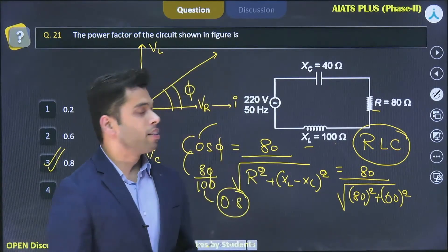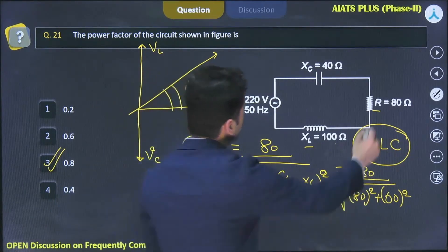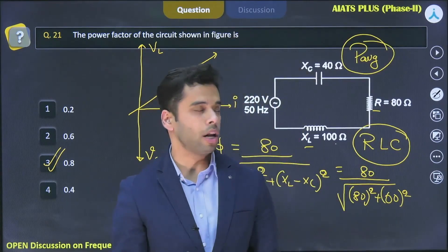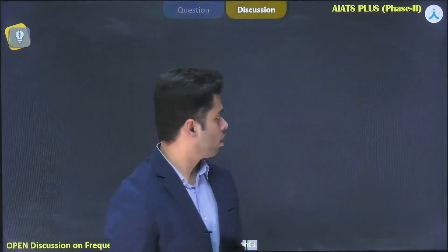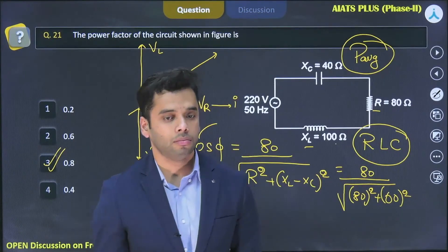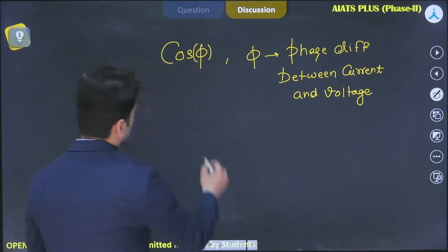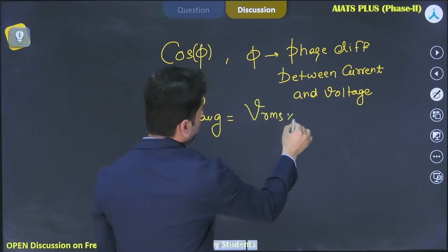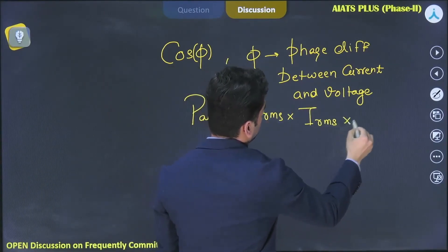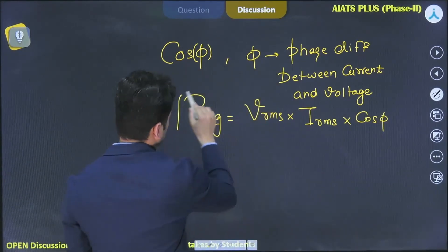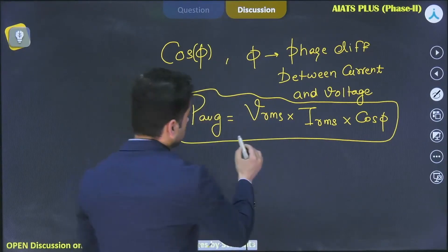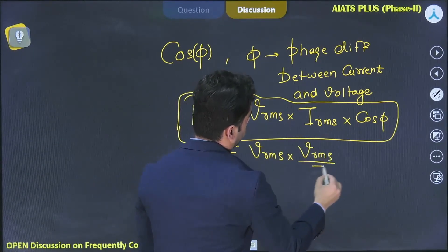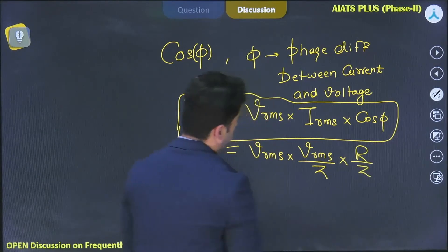Now, can you calculate the average power dissipated for this RLC circuit? The formula for average power is P_average = Vrms × Irms × cos φ. If Irms is not given, you can substitute Irms = Vrms / Z, and since cos φ = R/Z, the formula becomes P_average = Vrms² × R / Z².